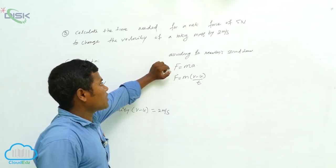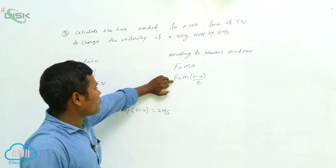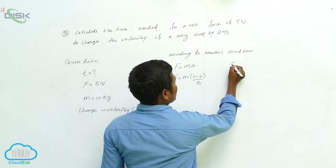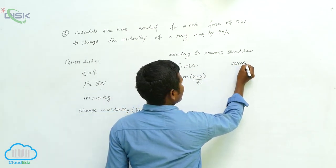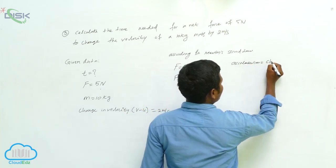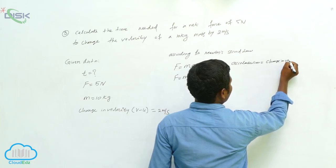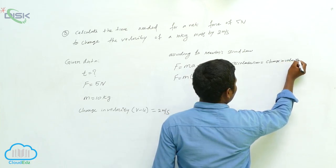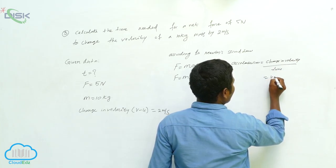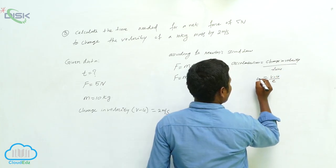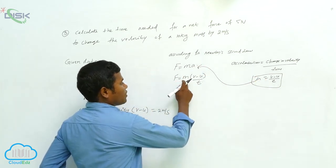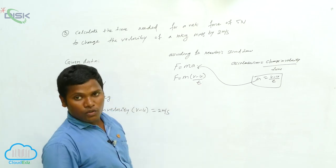According to Newton's second law, F is equal to m times a. Then F is equal to m into (v minus u) divided by t, where a is acceleration. Acceleration is change in velocity, which equals (v minus u) divided by t. Substituting that in, F equals m times (v minus u) divided by t.